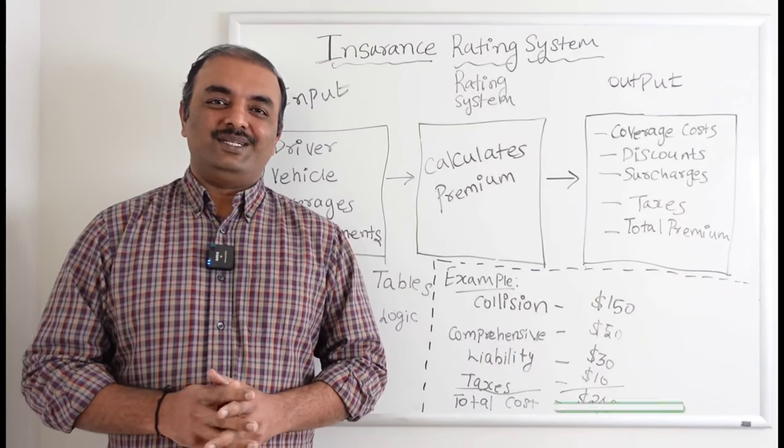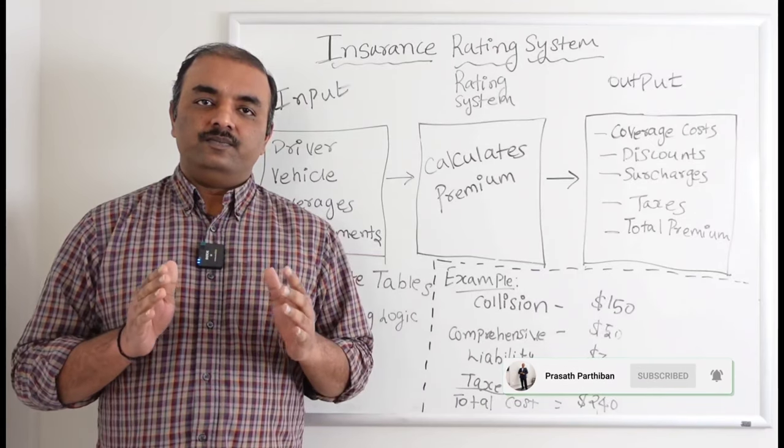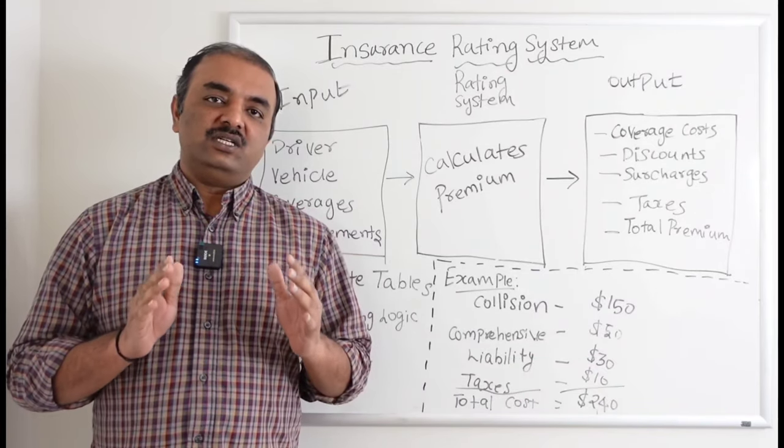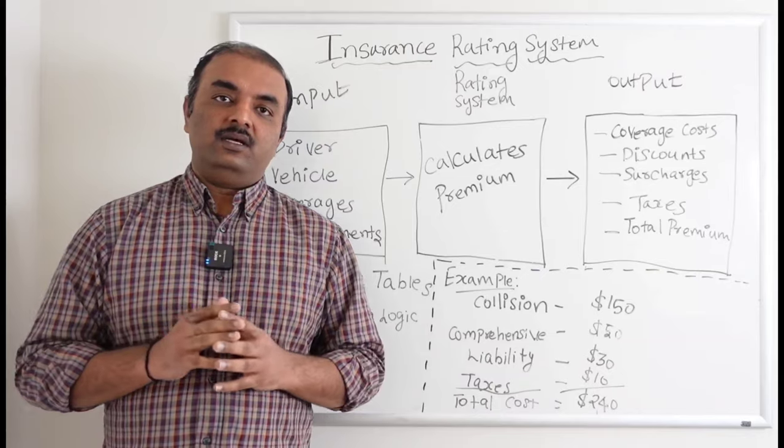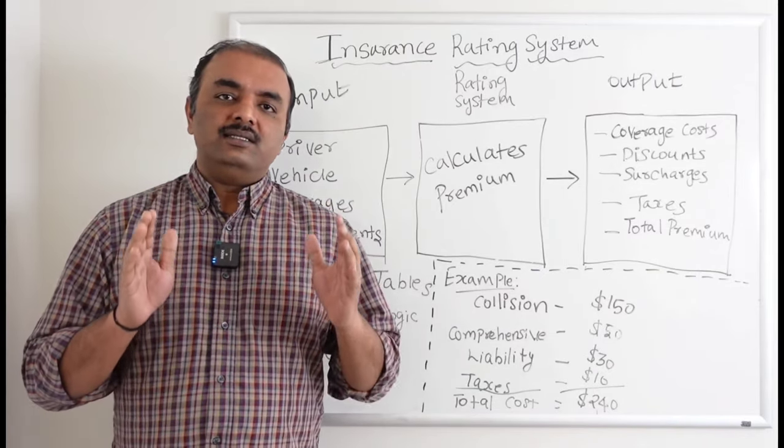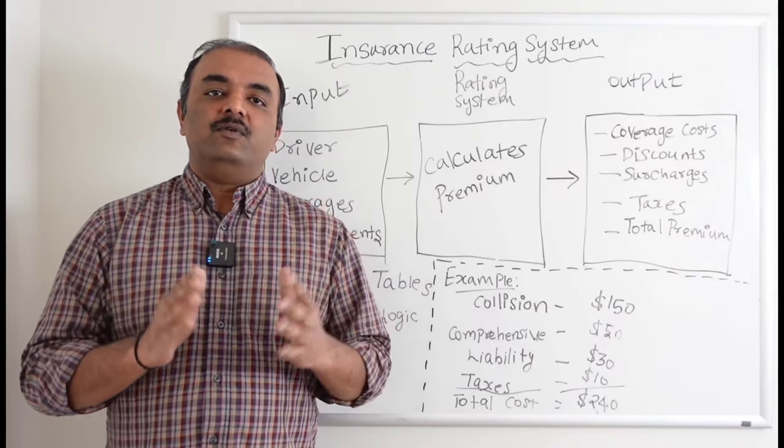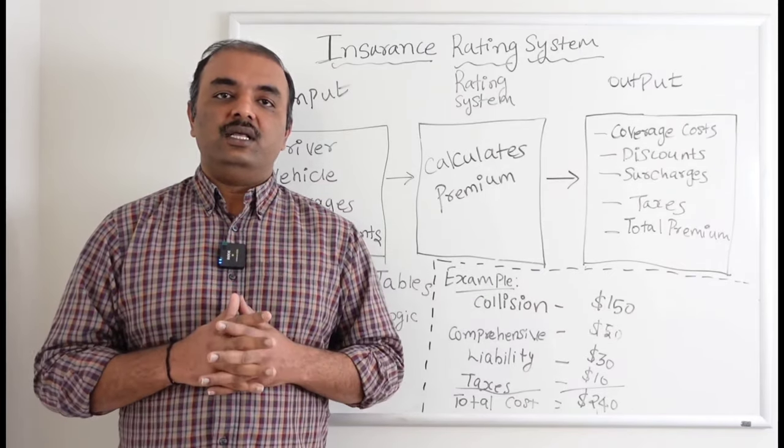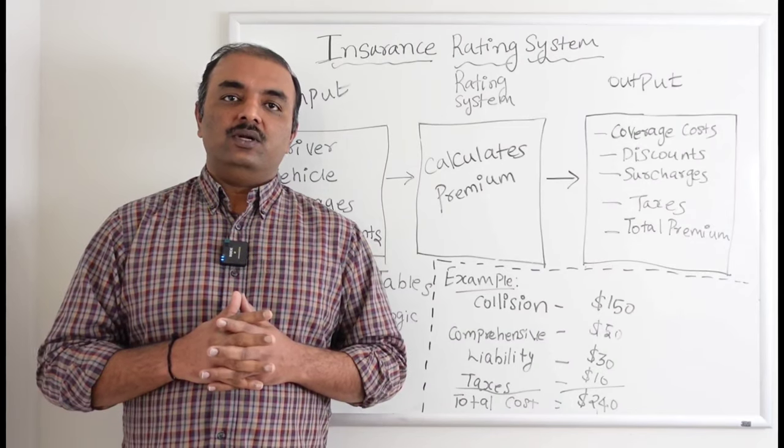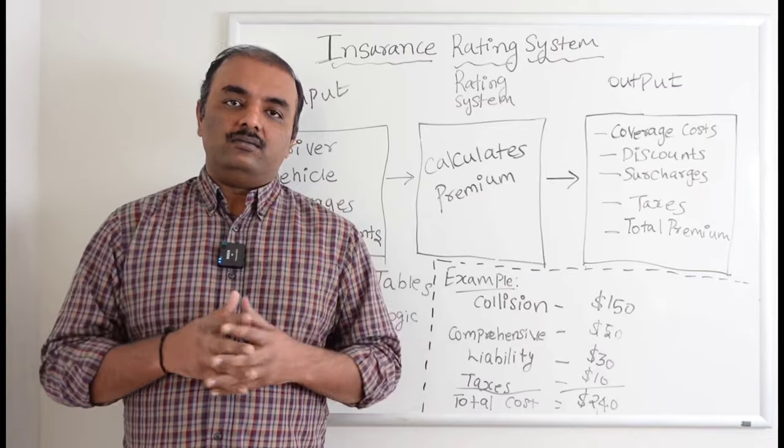Hi everyone, this is Prashant Parthibhan. Today I'm going to take a training on Property and Casualty Insurance Rating System. So what is a rating system? Primarily, a rating system is going to help us derive the premium for a property and casualty insurance policy. Let's take an example. Say if you're owning a car, say like two cars with two drivers.